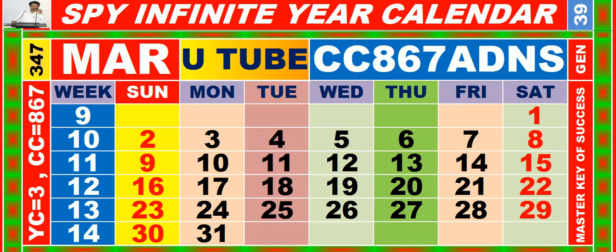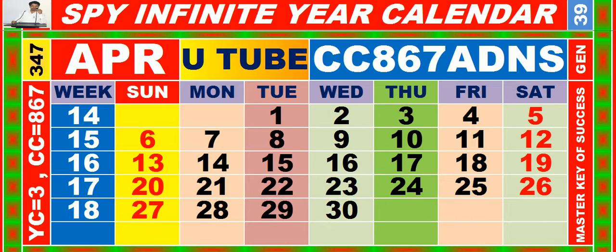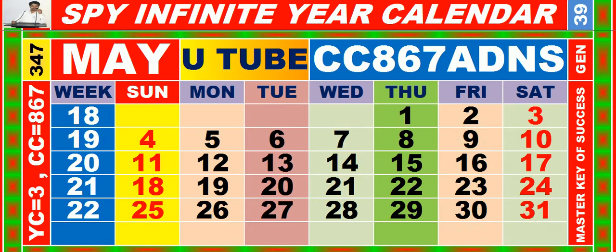Calendar for the month of March, having calendar code equal to 8, 6, 7. Calendar for the month of April, having calendar code equal to 8, 6, 7. Calendar for the month of May, having calendar code equal to 8, 6, 7.